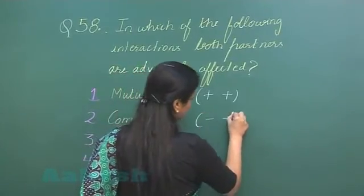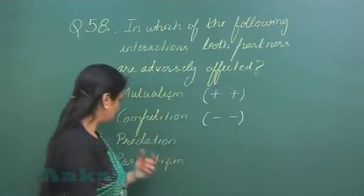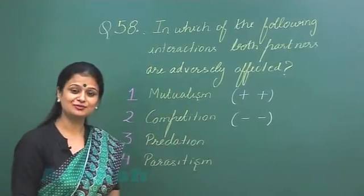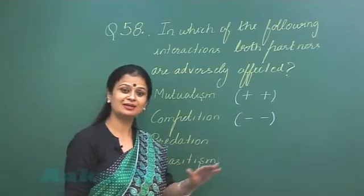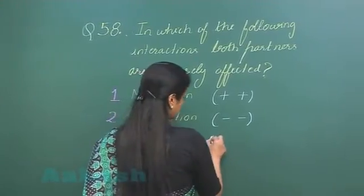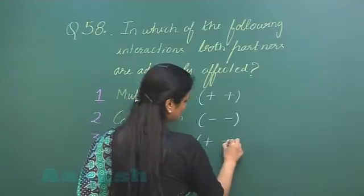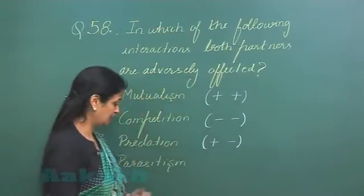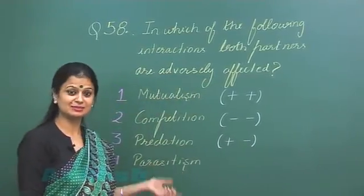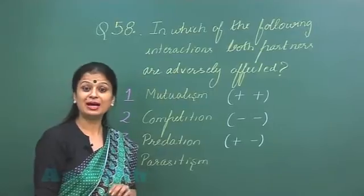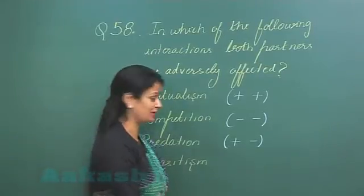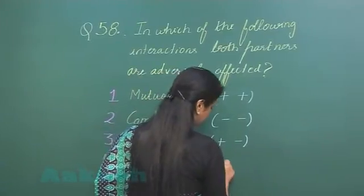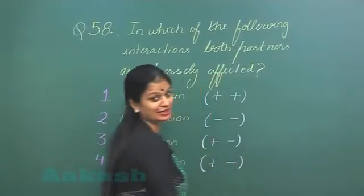So it is a minus-minus interaction. Now predation - in the case of predation, the predator is benefited and prey is harmed, so it is a positive-negative interaction. In parasitism, the parasite is benefited and host is harmed, so it is a positive-negative interaction.